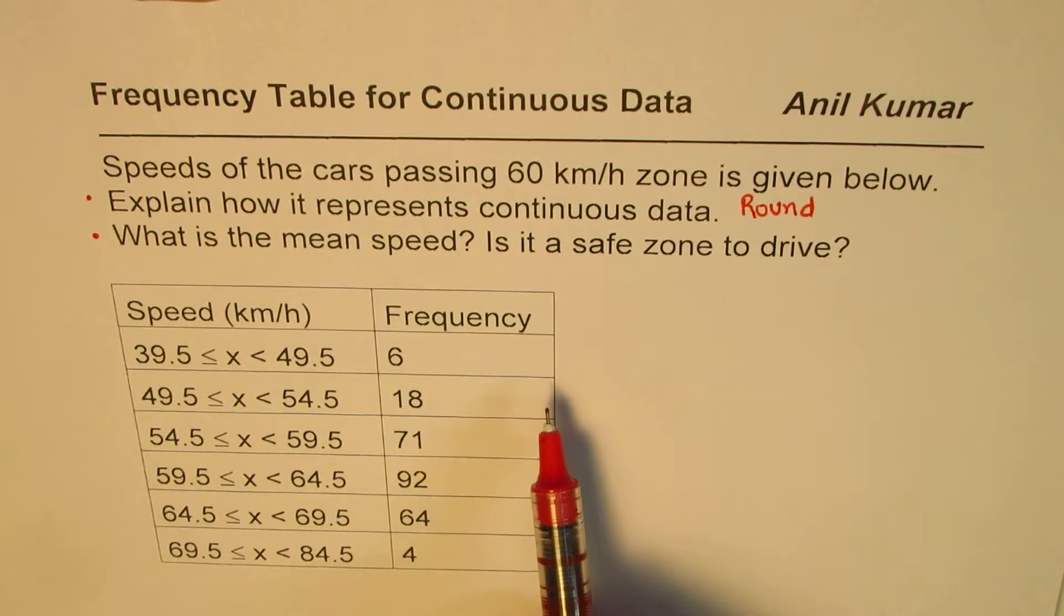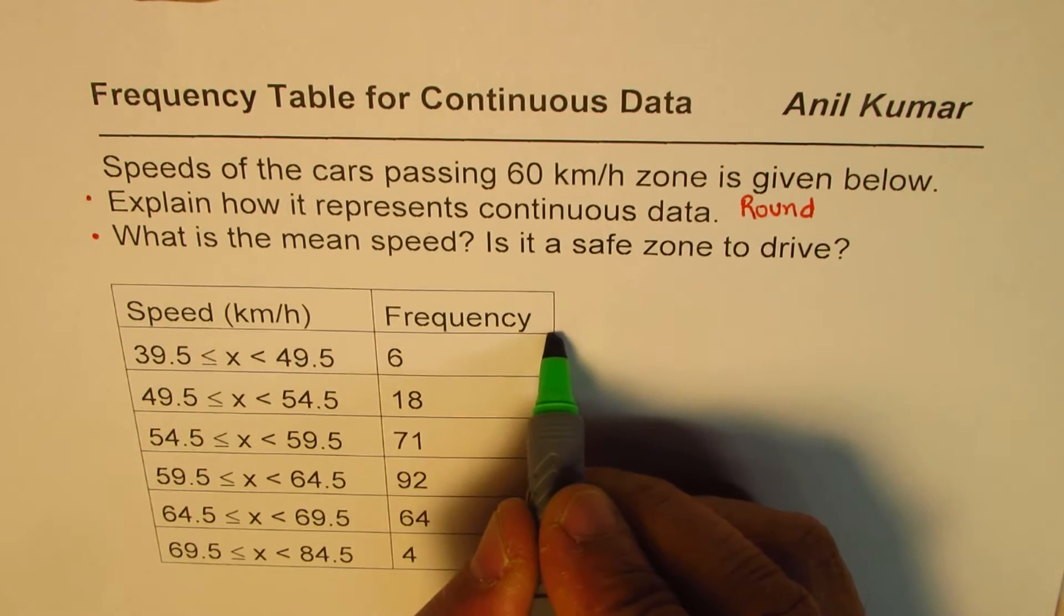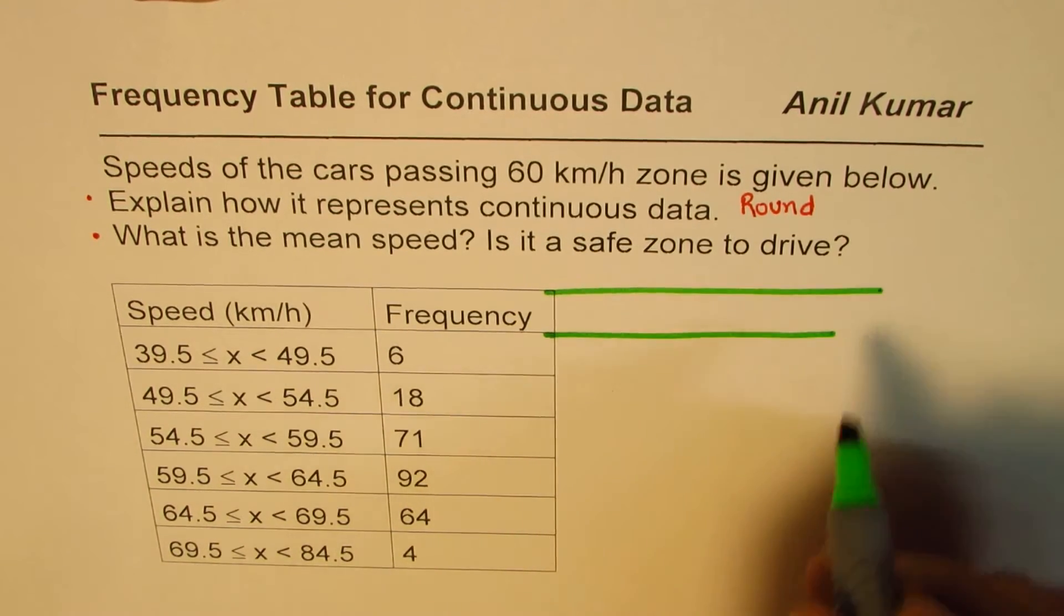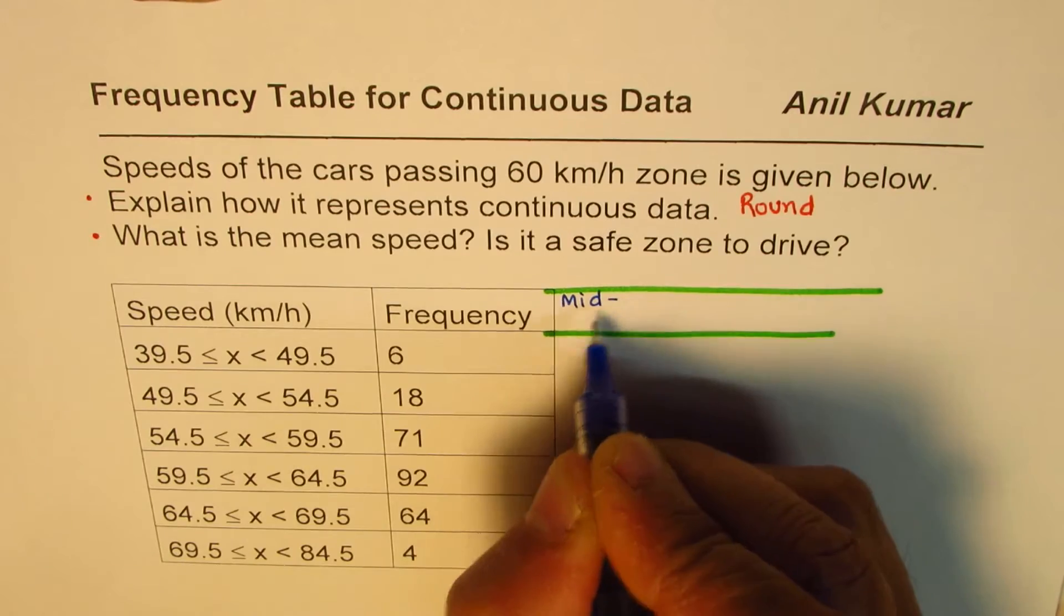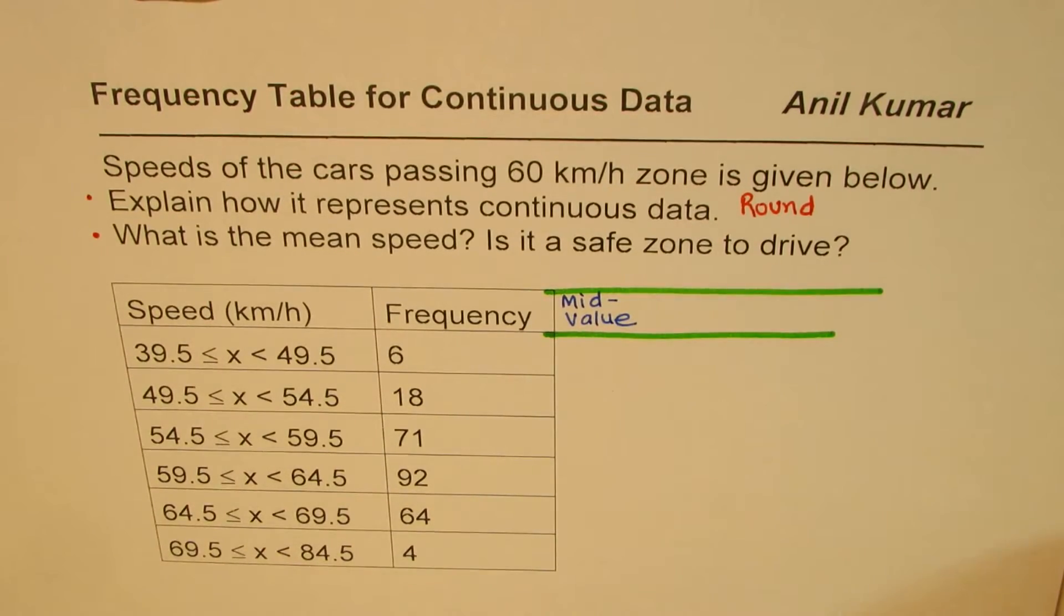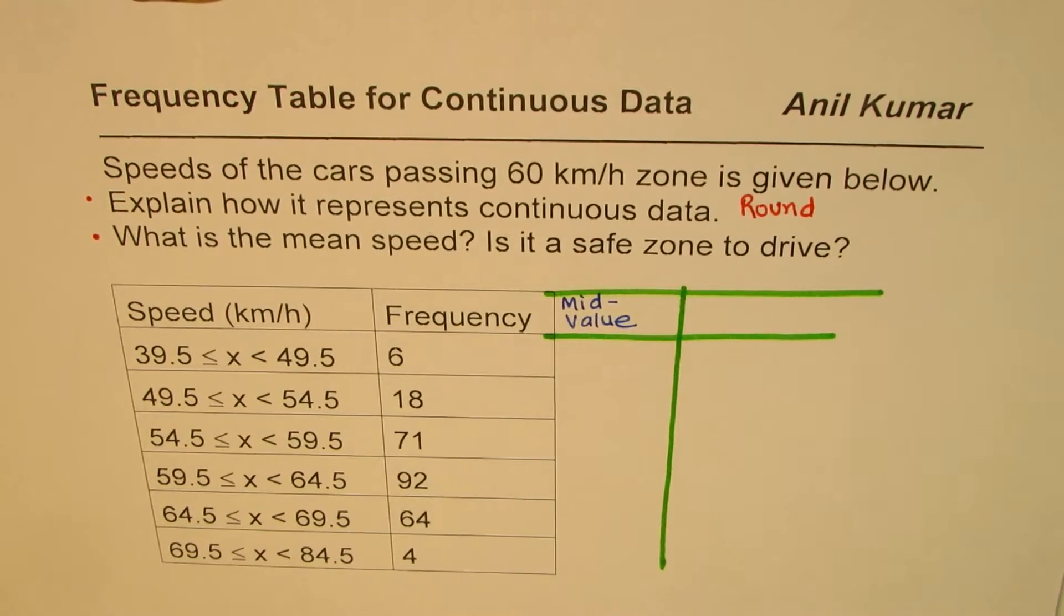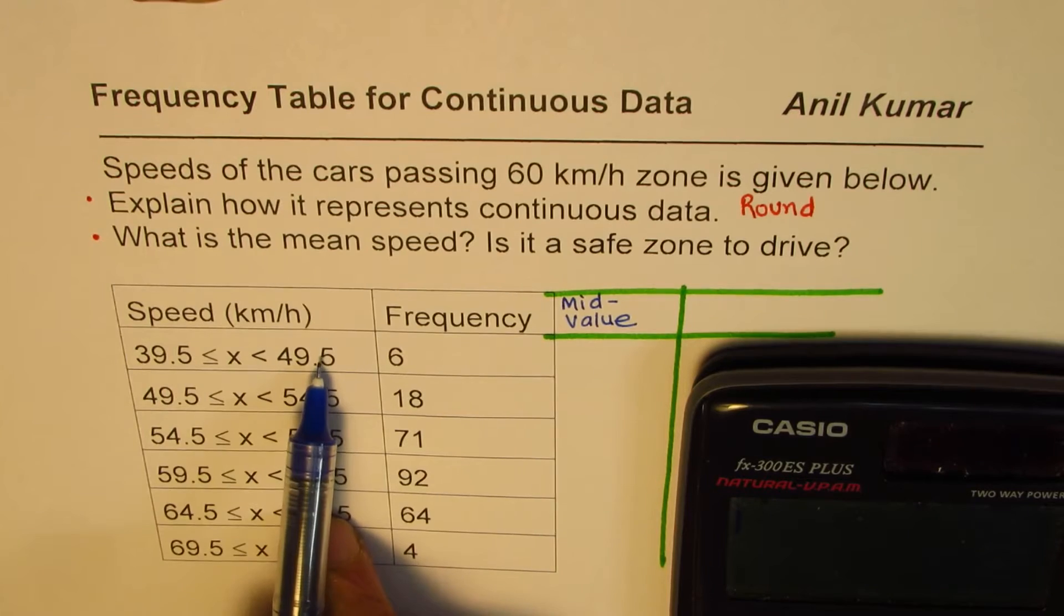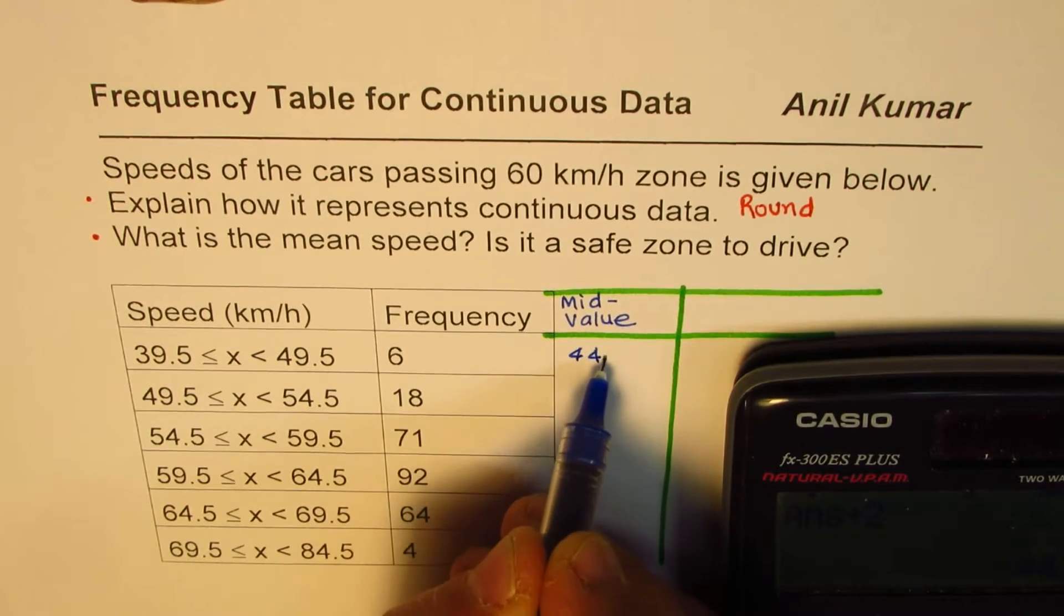Now let's see how to find the mean speed. As we did for discrete data, to find the mean we'll find the middle values. We'll introduce a column for mid values. The mid value of speed is calculated by adding the endpoints and dividing by two. So 39.5 plus 49.5 divided by 2 gives us 44.5. The next mid value is 49.5 plus 54.5 divided by 2, which gives 52.